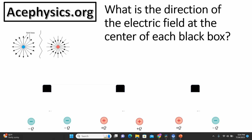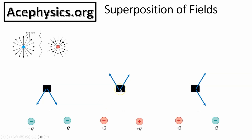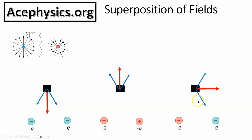Pause the video and see if you can determine the direction of the electric field at the center of each box. For the box with two positive charges, there are two electric fields at the center — one from the positive charge on the left pointing up-right, and one from the positive charge on the right pointing up-left. For the box with a positive and a negative charge, the field from the positive points toward the center and the field from the negative also contributes. The net electric field — shown as the red arrow — is the vector sum of the individual fields from all charges.